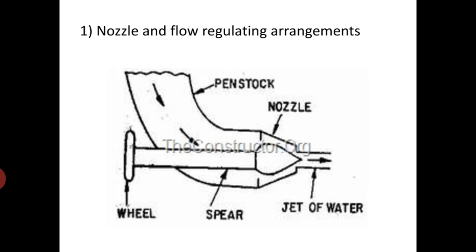As we know, water from the headrace comes down along the penstock. The penstock is a long pipe, and at the end of the pipe a nozzle is fitted. From this nozzle the jet issues and impinges on the buckets of the Pelton wheel.